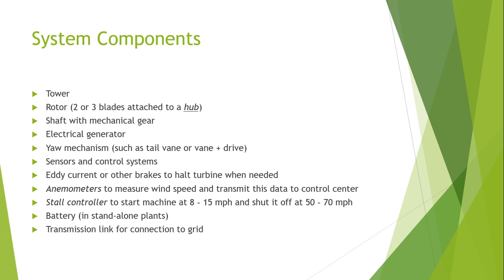The two types of generator control include stator and rotor current control. The next component is the eddy current or other brakes for the turbine.